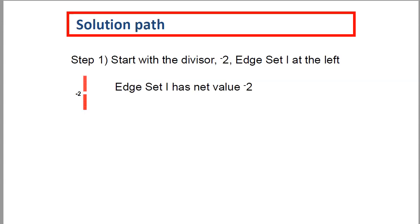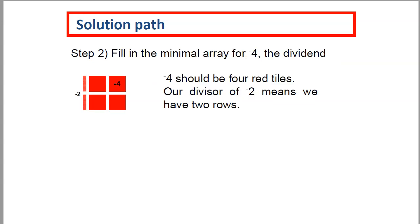We'll start with our divisor, negative 2, edge set 1 at the left. Since the net value is negative 2, we'll use two red edge pieces.